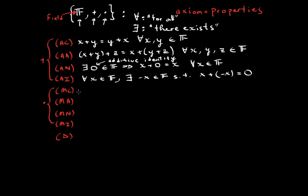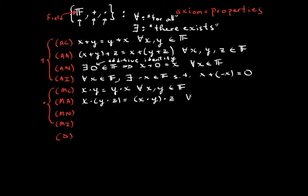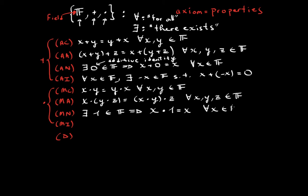For multiplicative commutativity: x times y equals y times x for all x and y in the field. For multiplicative associativity: (x times y) times z equals x times (y times z) for all x, y, z in the field. For multiplicative neutral: there exists a one in our field such that multiplying any element x by one still gives x.